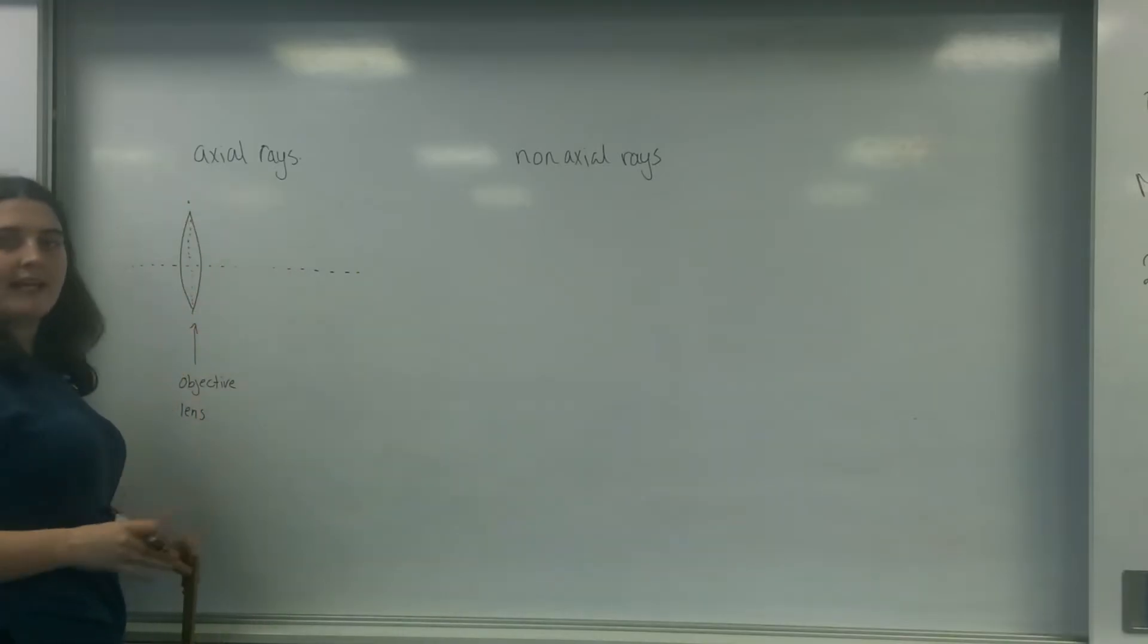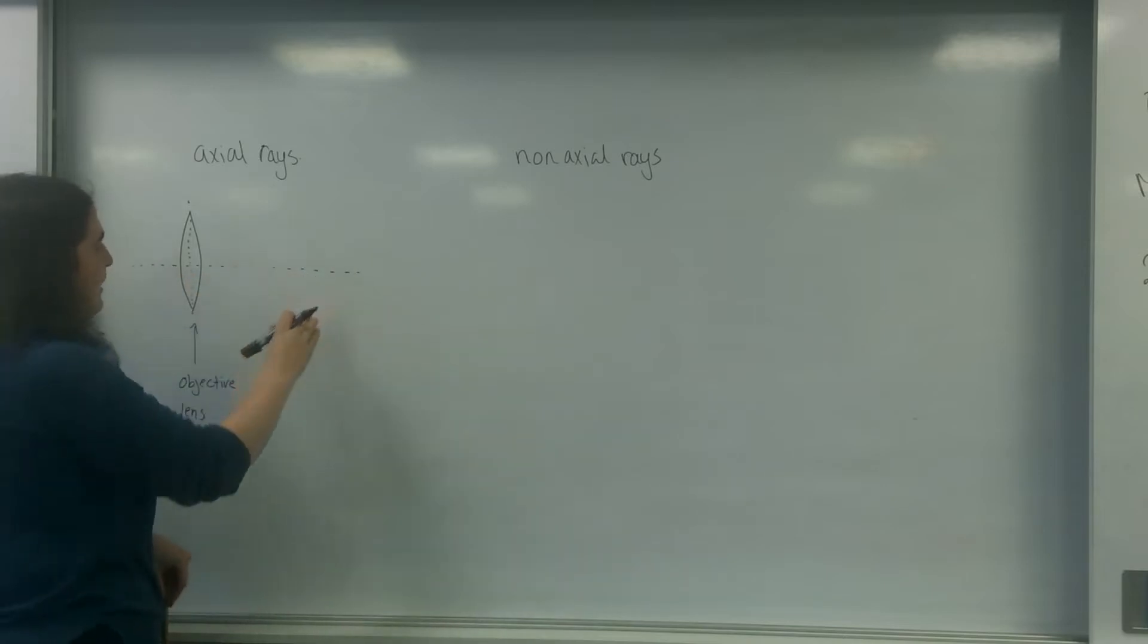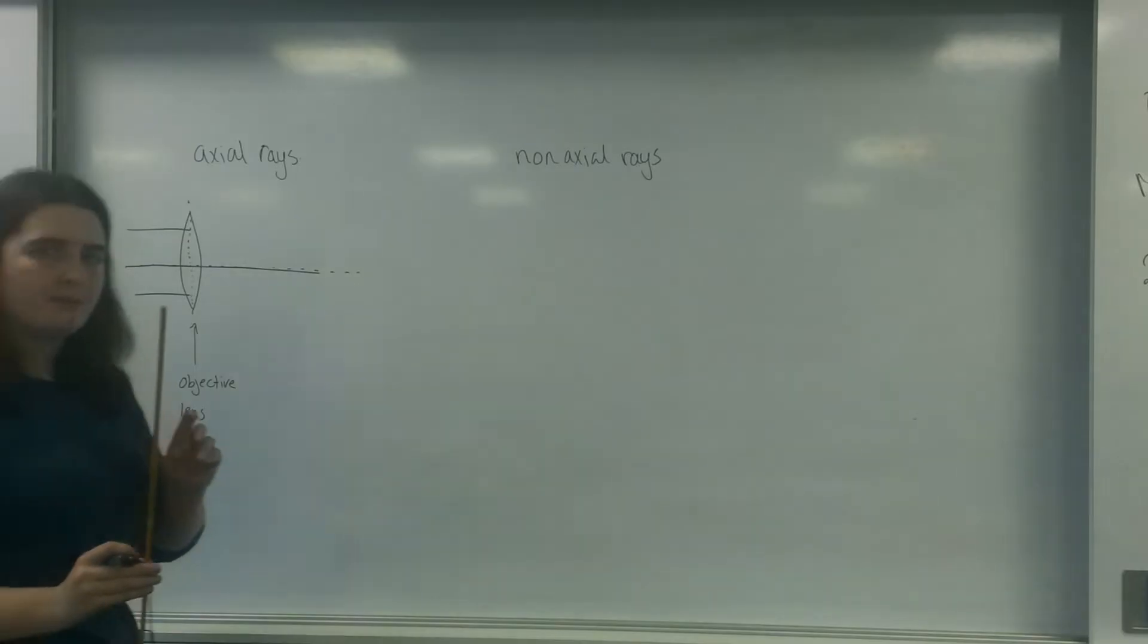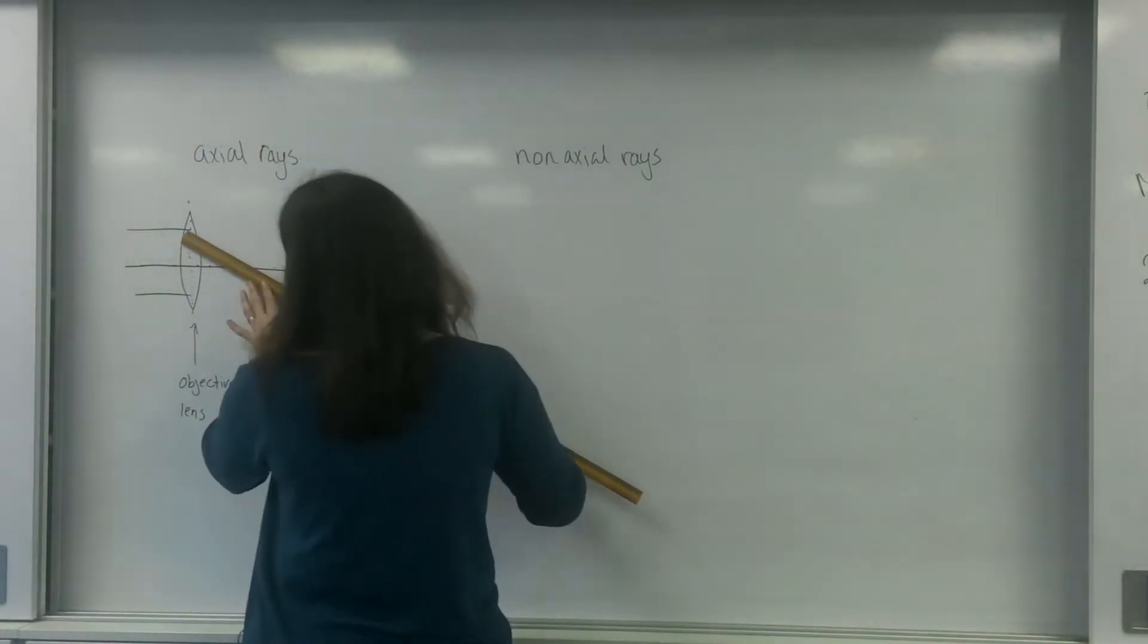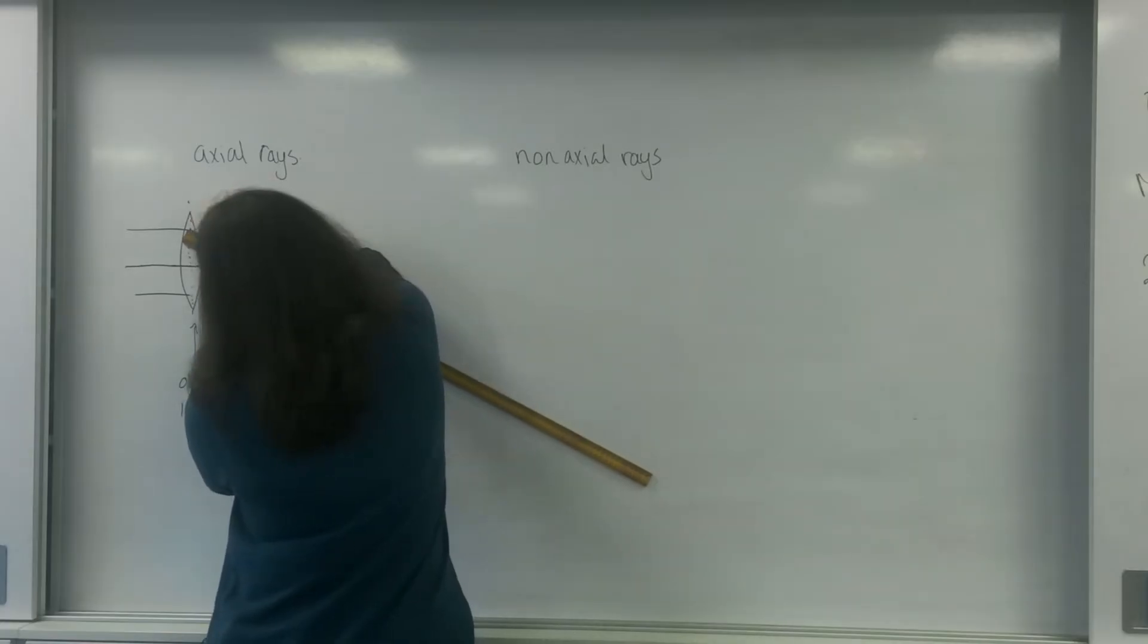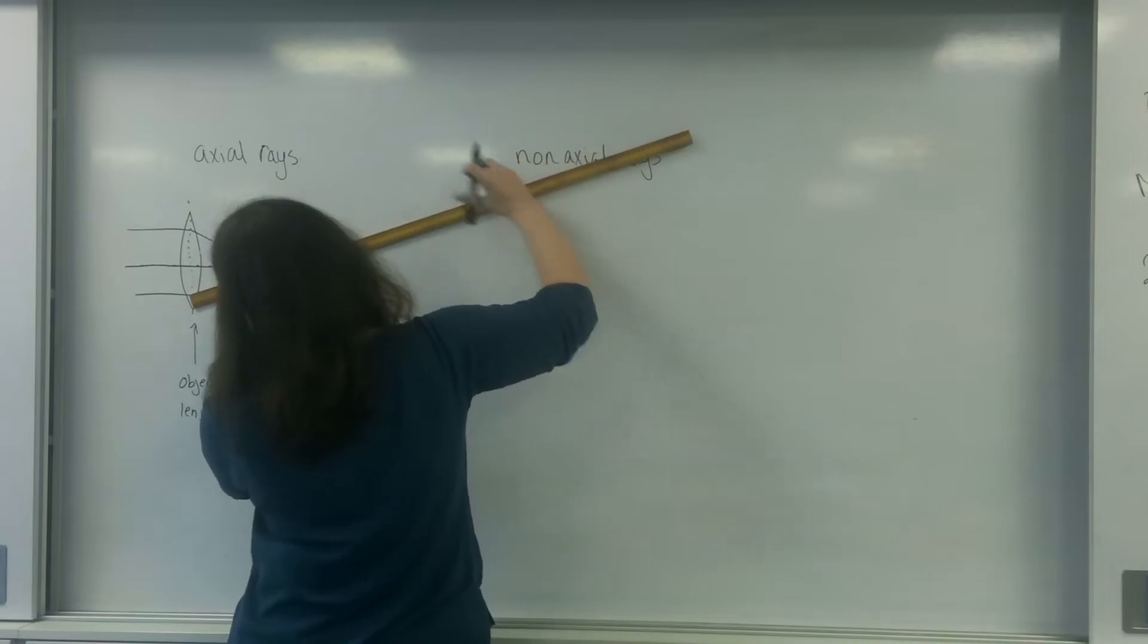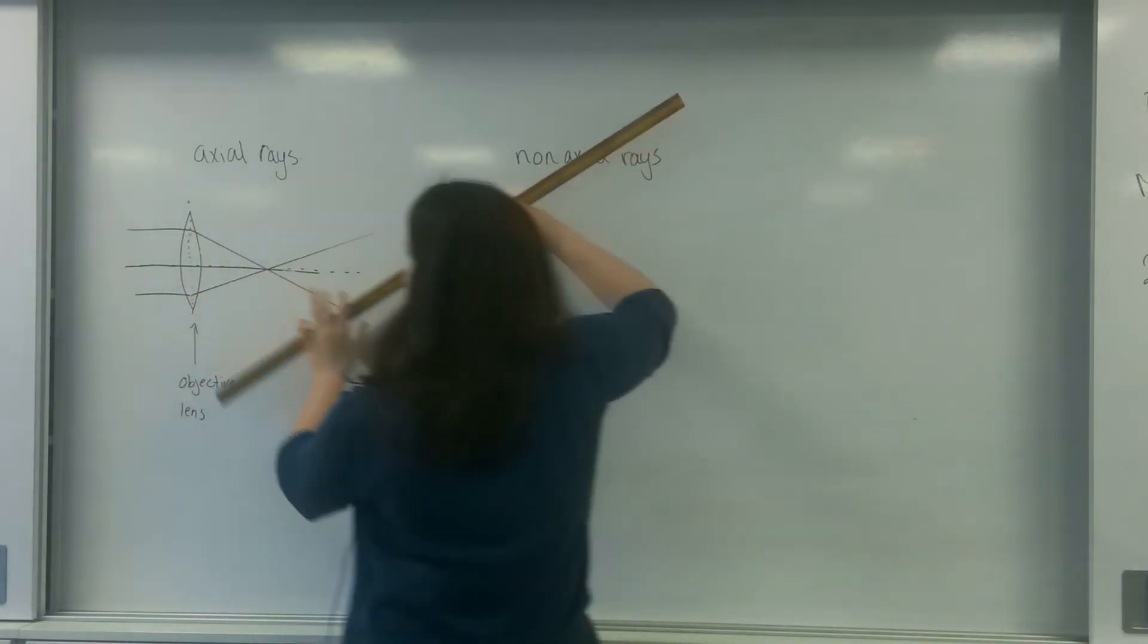For an axial ray, axial means it follows an axis. The first one you draw is the light ray that goes through the crossing point of the center, the symmetrical point, because that doesn't actually get affected. I then draw one above it, one below it. You have to make sure you have a ruler. You draw one and you draw the other crossing it.